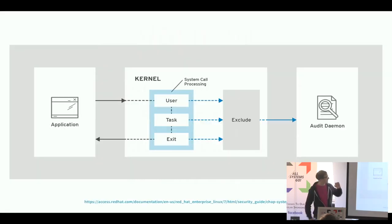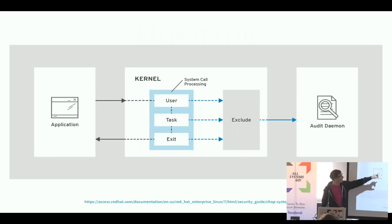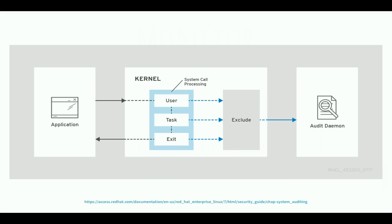Generally it looks like this: you have the application that is running, and in the kernel there are three possible event types you can catch with the auditing daemon — user interaction, task exit events, and others. On any one of these you can define an exclude rule, and whatever is caught by one of these three and passes through the exclude rule will be logged by the auditing daemon. This is basically how you get to events, and then you have a syntax to actually define those rules.